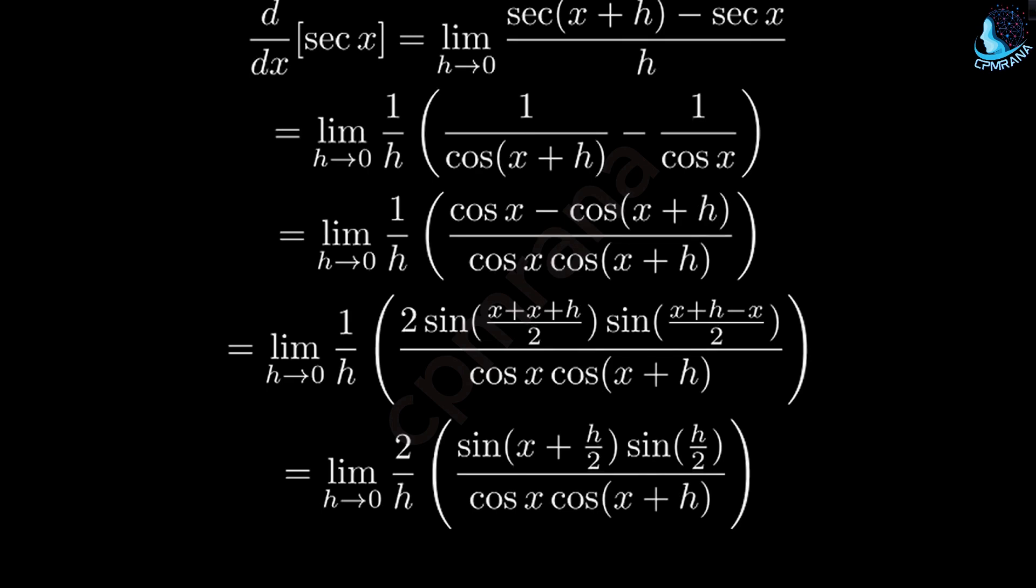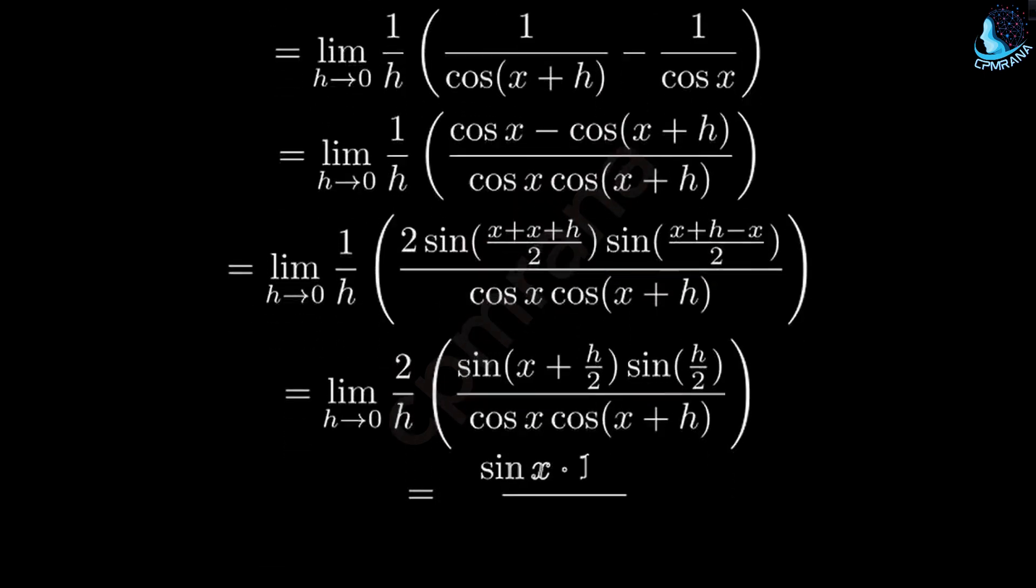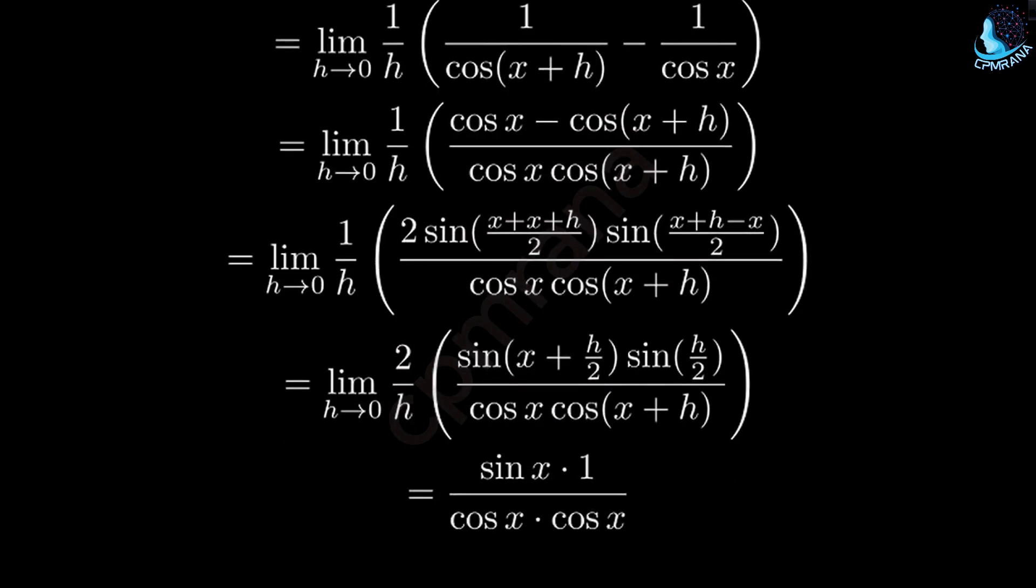Now, we can split this into separate limits. The limit of sin(x + h/2) as h approaches 0 is sin x. The limit of sin(h/2) over (h/2) as h approaches 0 is 1. And the limit of cos(x+h) as h approaches 0 is cos x.